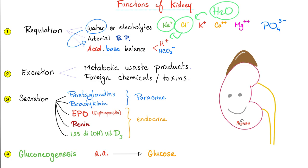Acid-base balance: if the kidney reabsorbs more hydrogen, you get more acidotic. If the kidney secretes more hydrogen, you get more alkalotic. Conversely, reabsorb more bicarbonate and you get alkalotic; reabsorb less bicarbonate and you become more acidotic. Excretion of metabolic waste and foreign chemicals — get rid of the bad stuff.